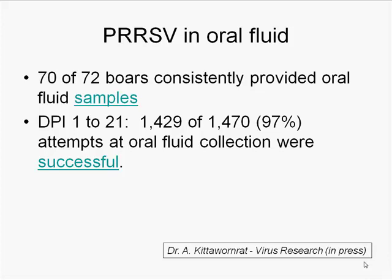We had 72 boars total and excellent success training 70 of them. The kind of enthusiasm these animals show is typical — it's not difficult collecting from boars, at least the trainable ones. In this study we soaked ropes in apple juice and sugar then dried them before putting them out. But subsequent trials with individually crated boars showed that's not really necessary — it's still a playful activity they look forward to, so you don't need to flavor the ropes.